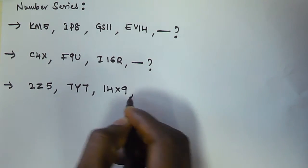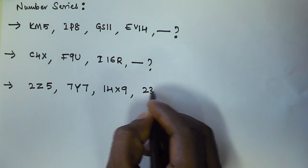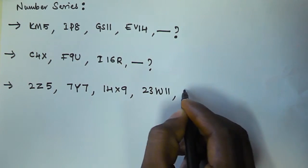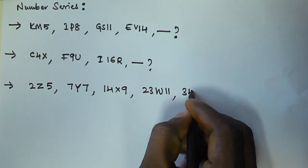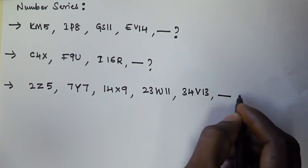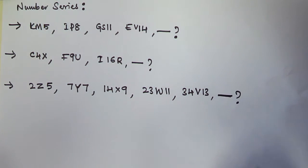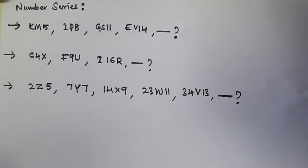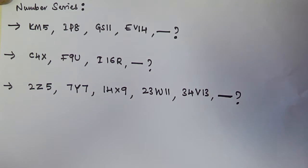The third problem is 2Z5, 7Y7, 14X9, 23W11, 34V13 — what is the next term? So these are the three problems. In this number series, alphabets are also present, so we have to consider the alphabet series as well in order to find the next term.